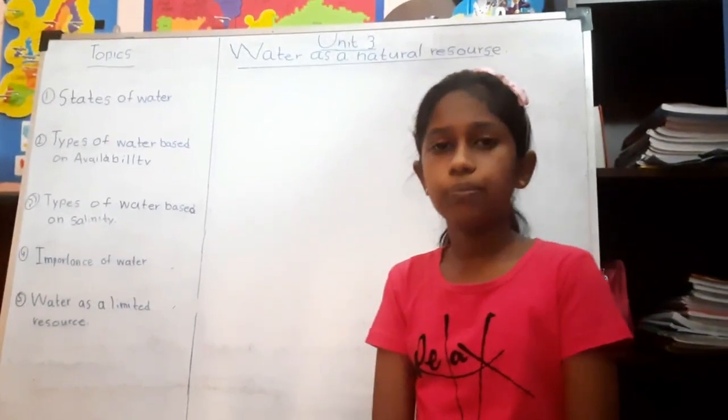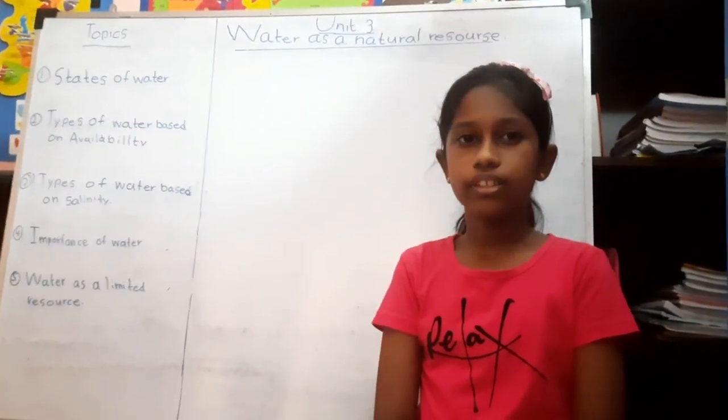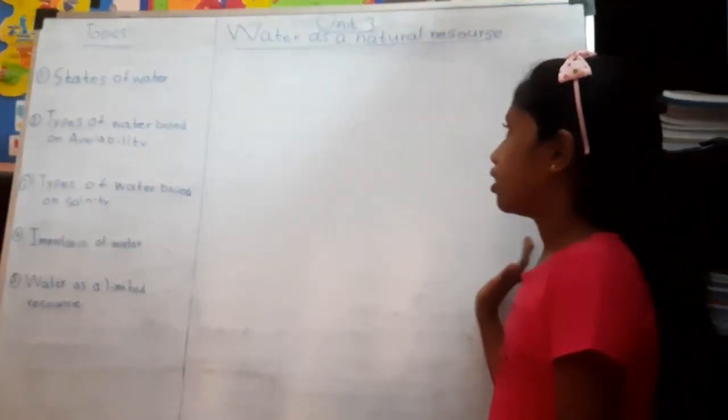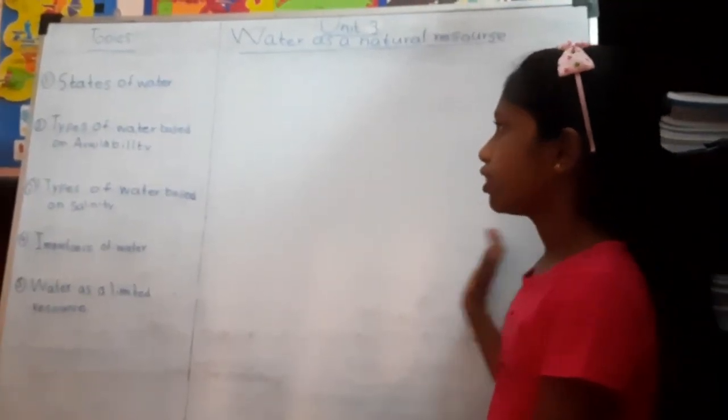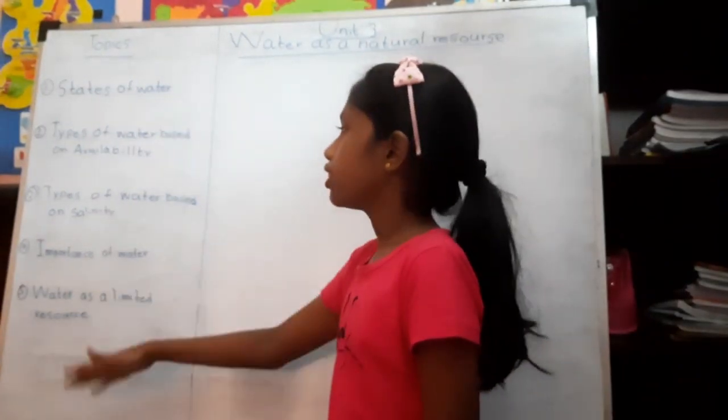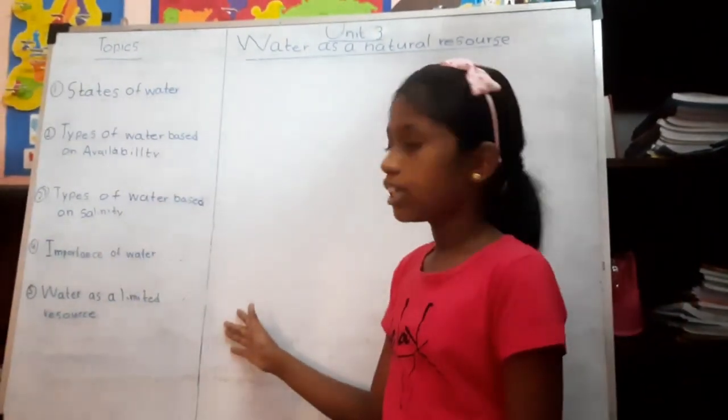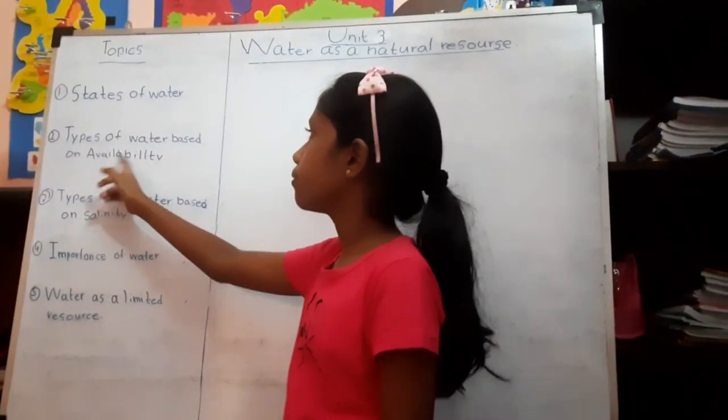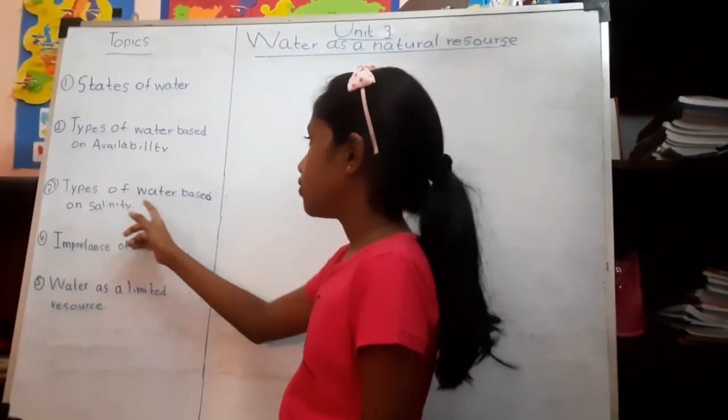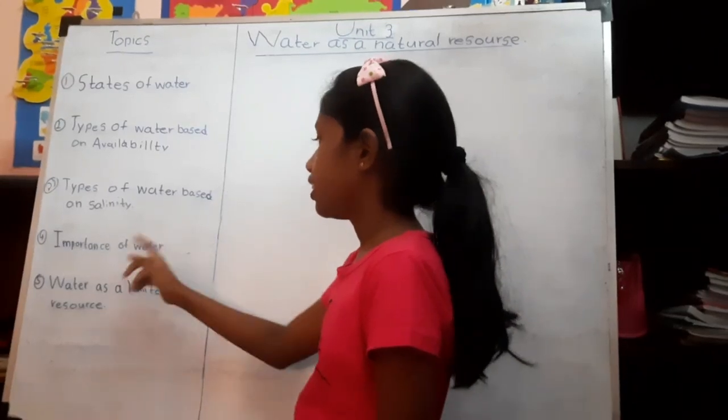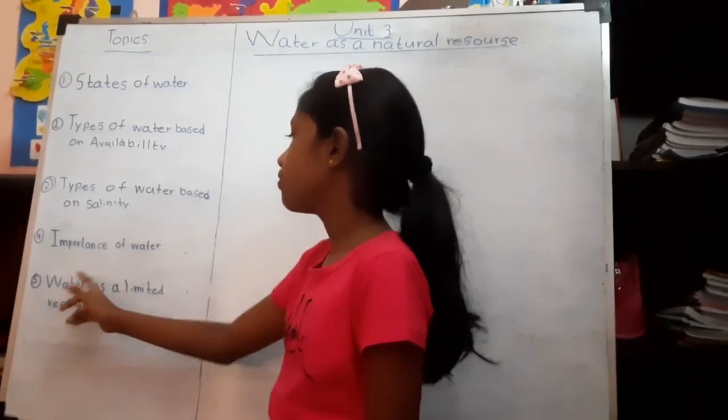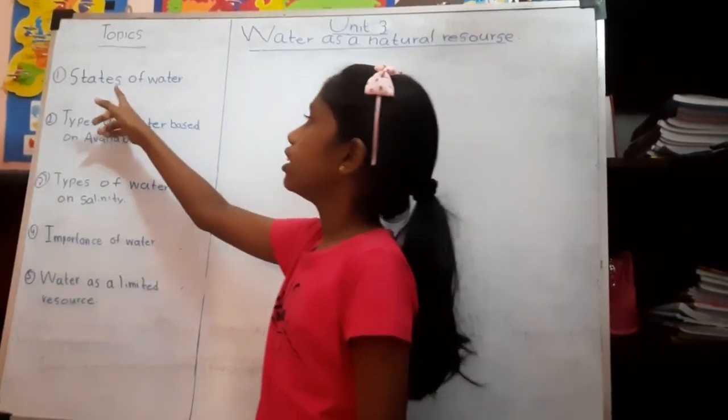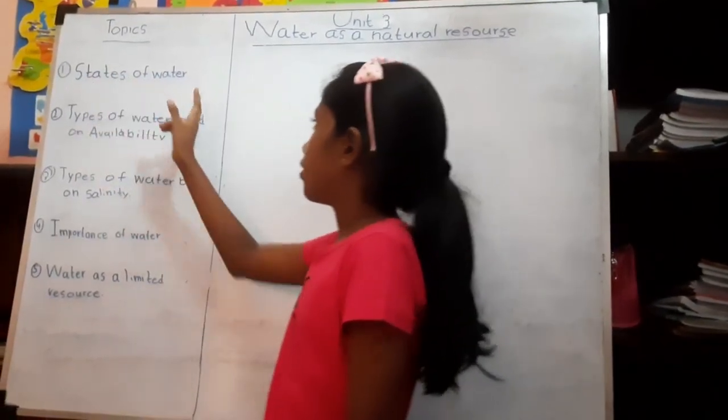Water is the most important natural resource given us by nature. Under this lesson, I am going to teach you these five sub-topics. They are states of water, types of water based on availability, types of water based on salinity, importance of water, and water as a natural resource. First, I am going to do the first topic, that is states of water.